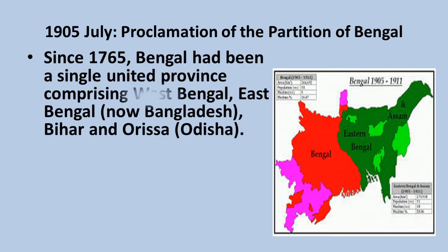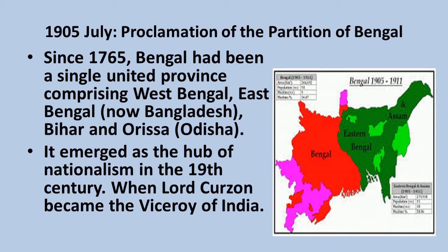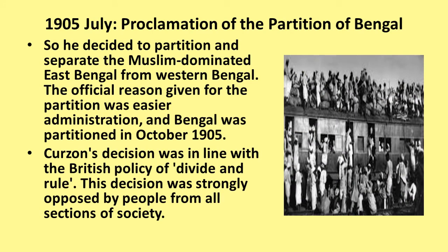Next, we will discuss about the partition of Bengal. Since 1765, Bengal had been a single united province, including West Bengal, East Bengal, Bihar, and also Odisha. It emerged as a centre of nationalism in the 19th century. At the time, the Viceroy of India was Lord Curzon. Lord Curzon decided to partition Bengal in 1905 and separate the Muslim-dominated East Bengal from West Bengal. He said the partition of Bengal was only for administrative purposes. But Indians, both Muslims and Hindus, believed this was a divide and rule policy, and they strongly opposed it.